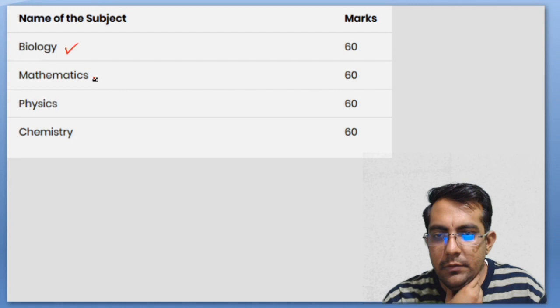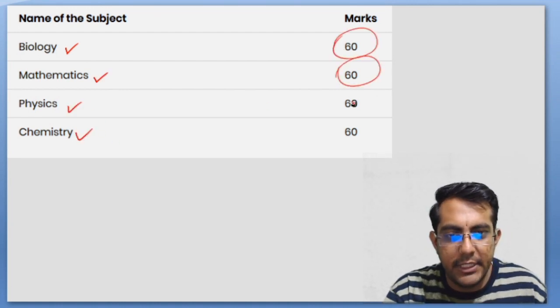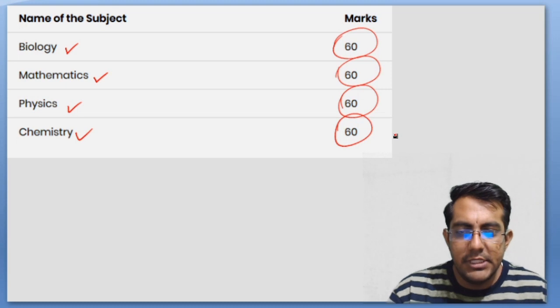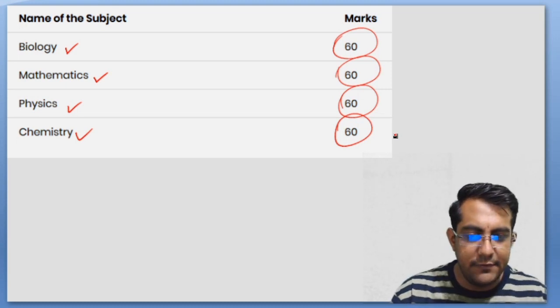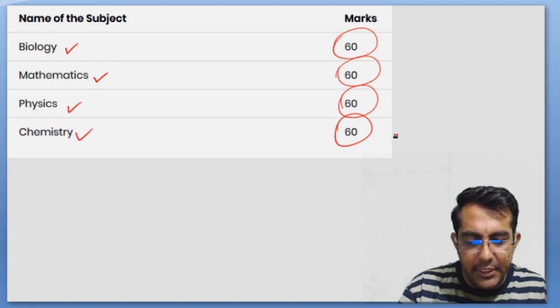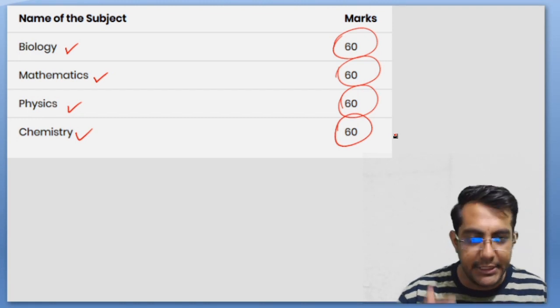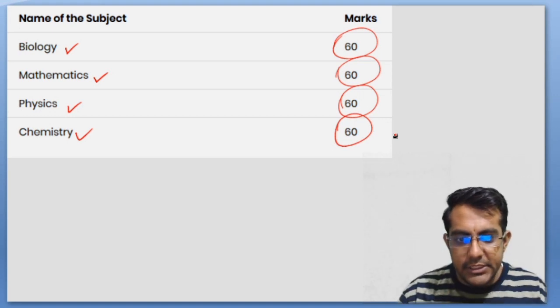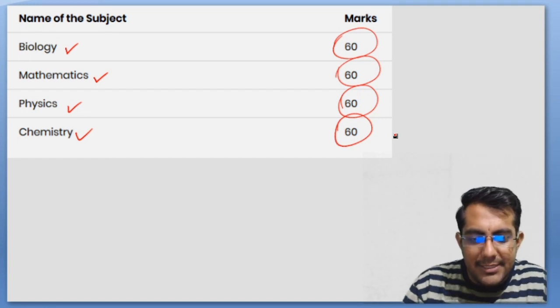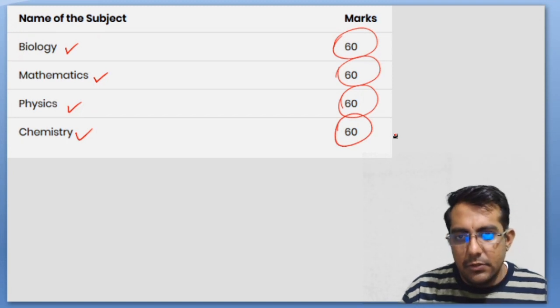When it comes to syllabus, we have four subjects to prepare: biology, maths, physics, and chemistry. The weightage is 60 marks for each subject. The weightage is equal, but students often just focus on maths or chemistry. This should not happen because you have to focus on each and every subject. Every subject must be good because competition is increasing.